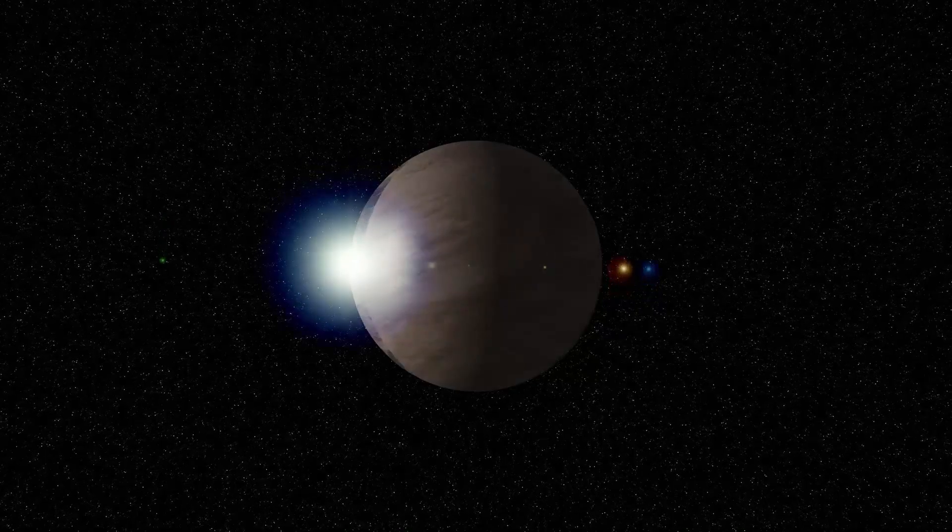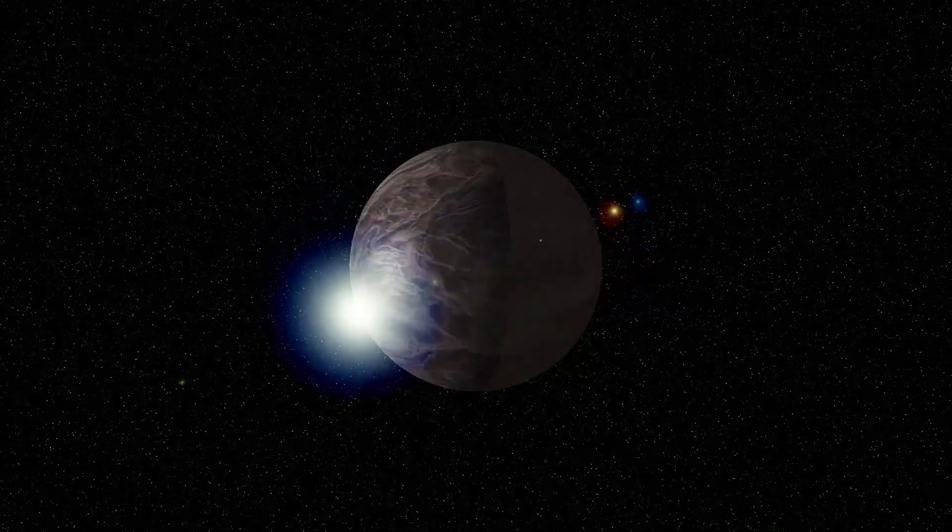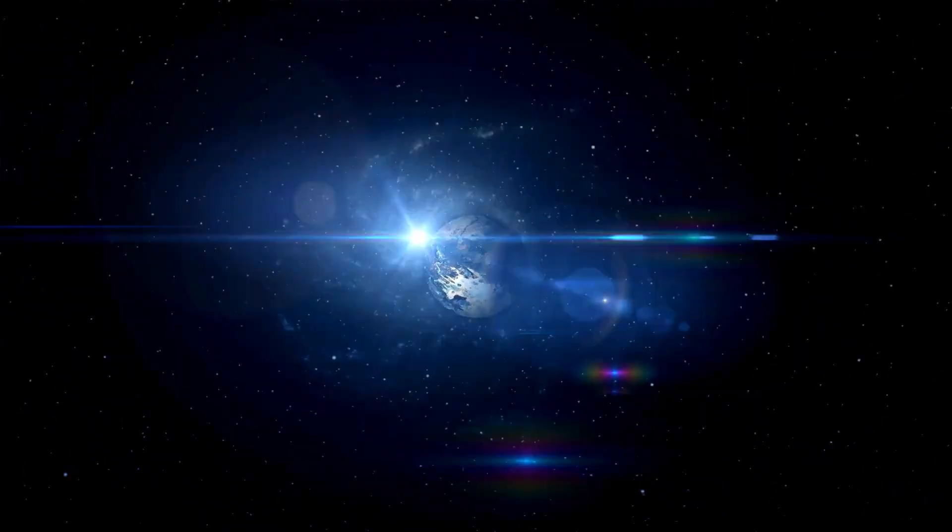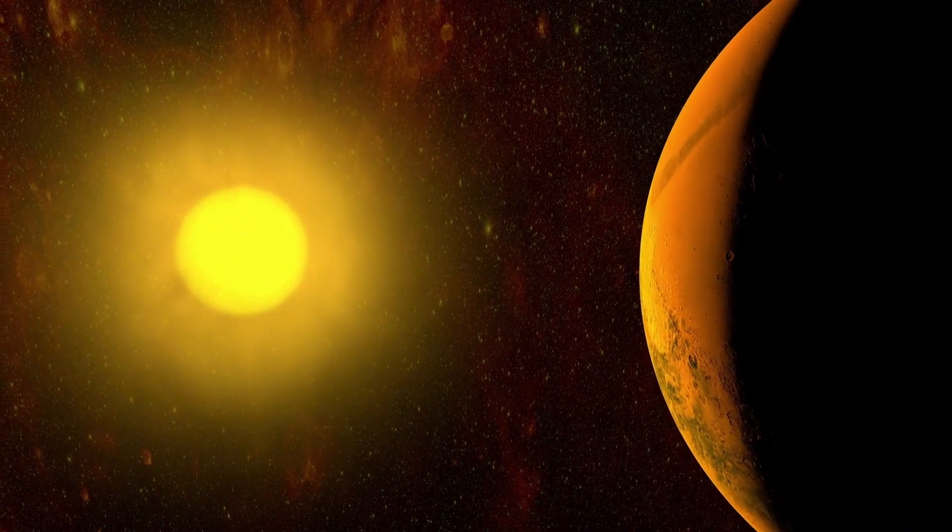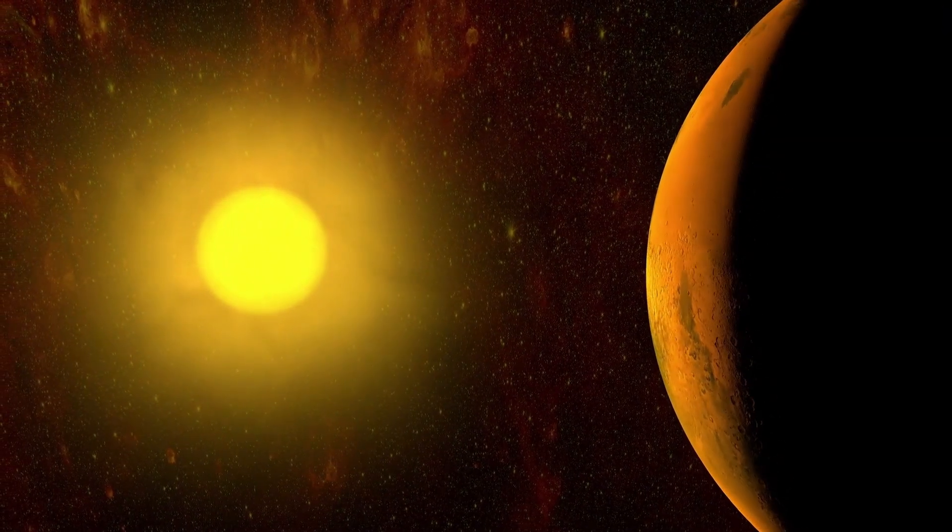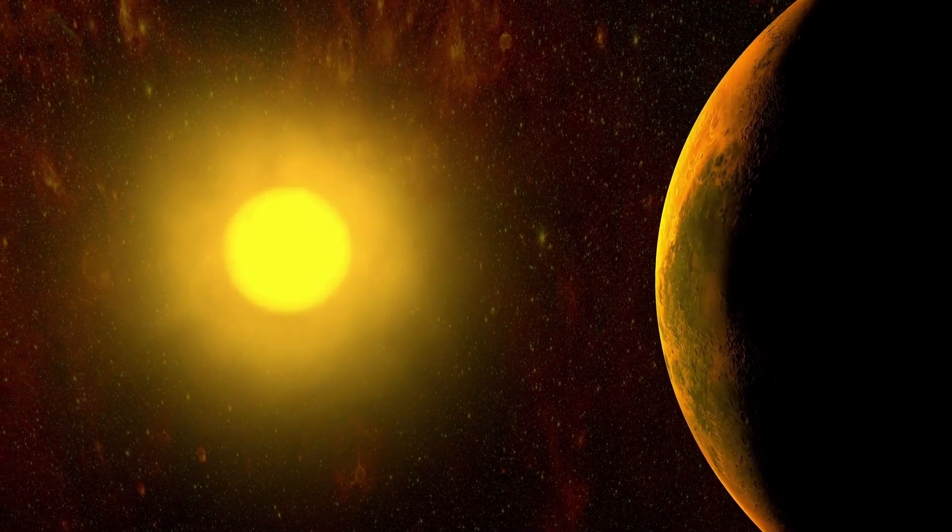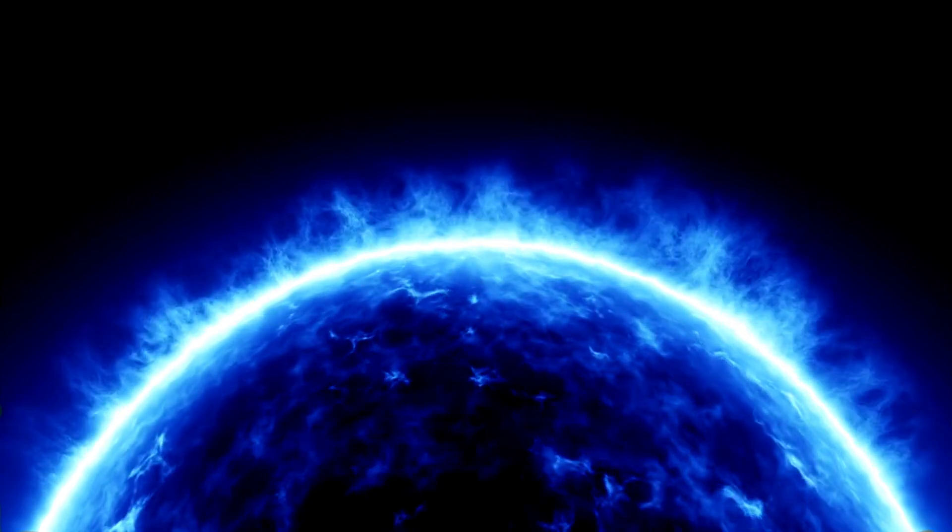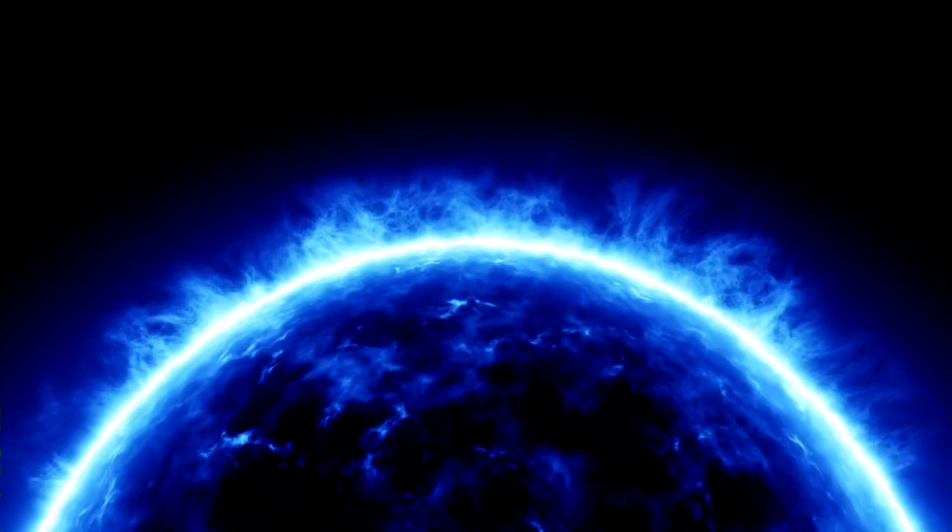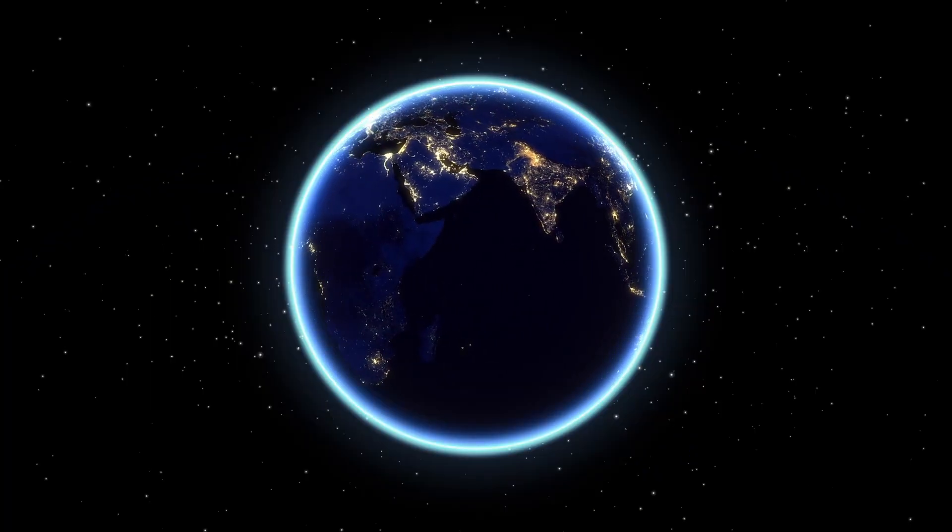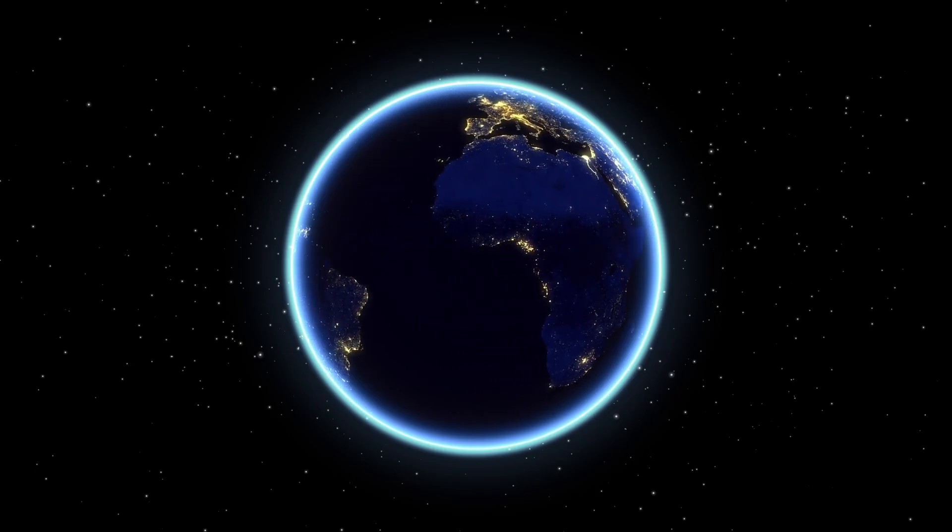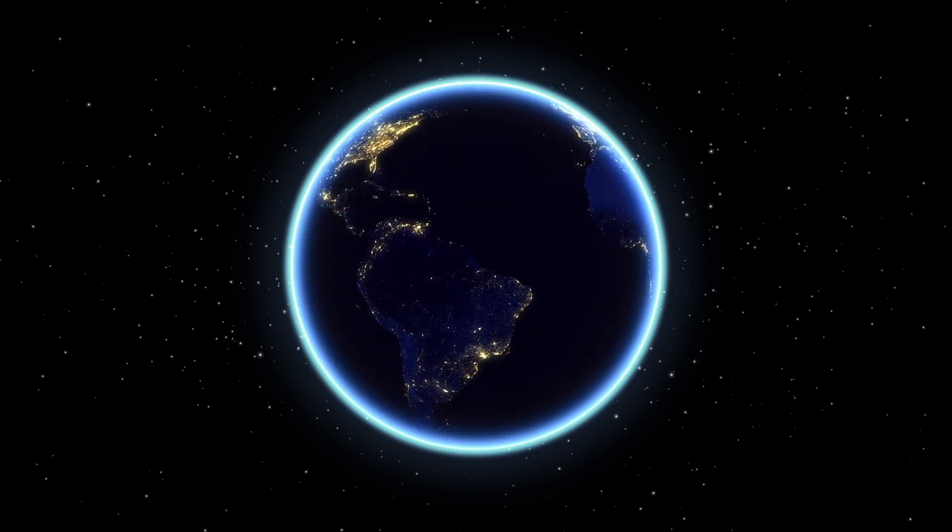However, things do not end there. There is also the issue of the assortment of exoplanets. These planets come in various types with diverse sizes, temperatures, and compositions. For example, some exoplanets are scorching hot, while others are cold. Some have thick climates that could uphold life, while others have no air at all. This variety makes it challenging for researchers to pinpoint where to look for life.